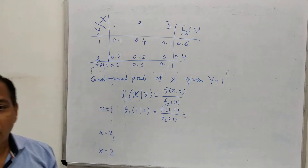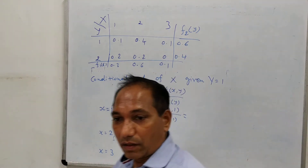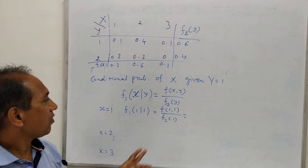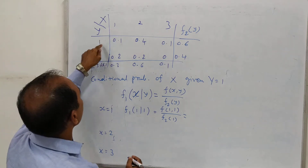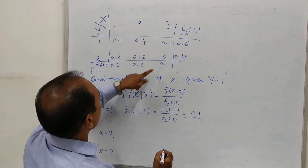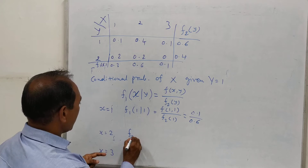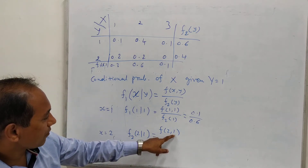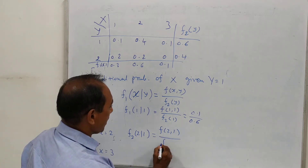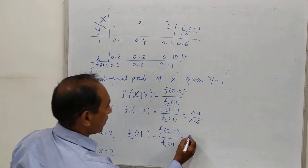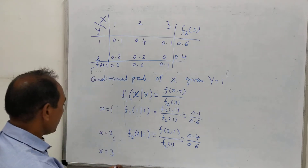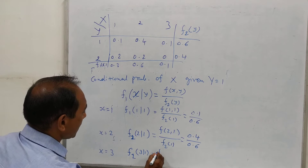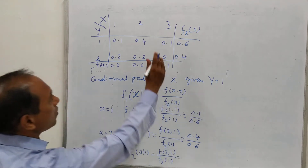Note that even if we are not asked to find marginal probability, we are still required to compute f2(y) because it appears in the denominator. For x equal to 1, y equal to 1: f(1|1) equals f(1,1) divided by f2(1), which is 0.1 divided by 0.6. For x equal to 2: f(2|1) equals f(2,1) divided by f2(1), which is 0.4 divided by 0.6. Similarly, f(3|1) equals f(3,1) divided by f2(1), which you can compute yourself.